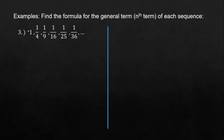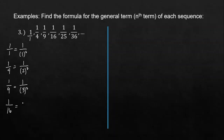So the first term, 1, is not in fraction form, but we can make it 1 over 1. And notice the denominators of the fractions — all of them are called perfect squares. So 1 over 1 can be written as 1 over 1 squared. 1/4 can be written as 1 over 2 squared. 1 over 9 is 1 over 3 squared. 1 over 16 is 1 over 4 squared. 1 over 25 is 1 over 5 squared. And 1 over 36 is 1 over 6 squared.